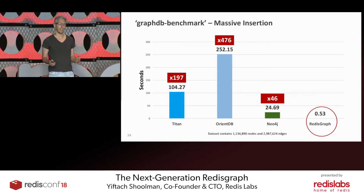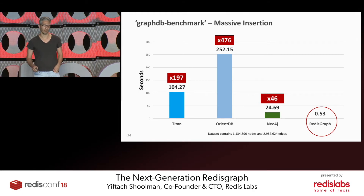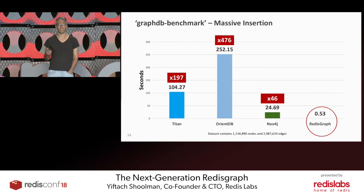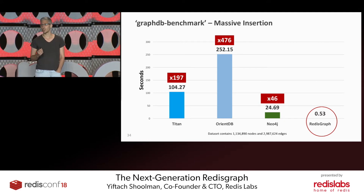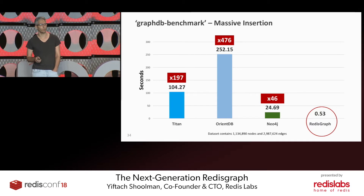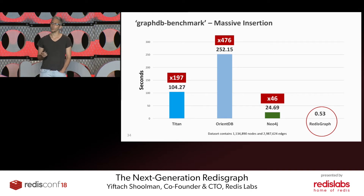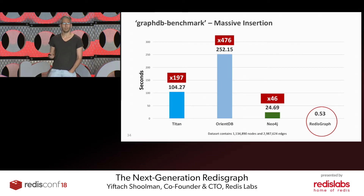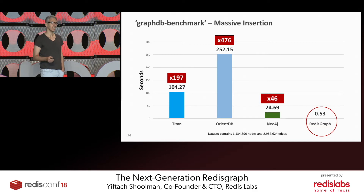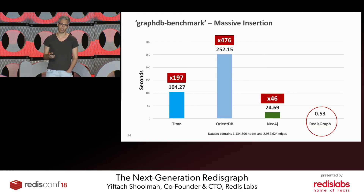The first benchmark deals with inserting or importing a large dataset into your graph database — a preliminary step that can become quite a hurdle. We wanted to make sure the new version of RedisGraph can deal with bulk inserts really fast. We were able to import a graph with over 1 million nodes and 3 million edges within half a second, which is at least 46 times faster than any other graph database we tested against.